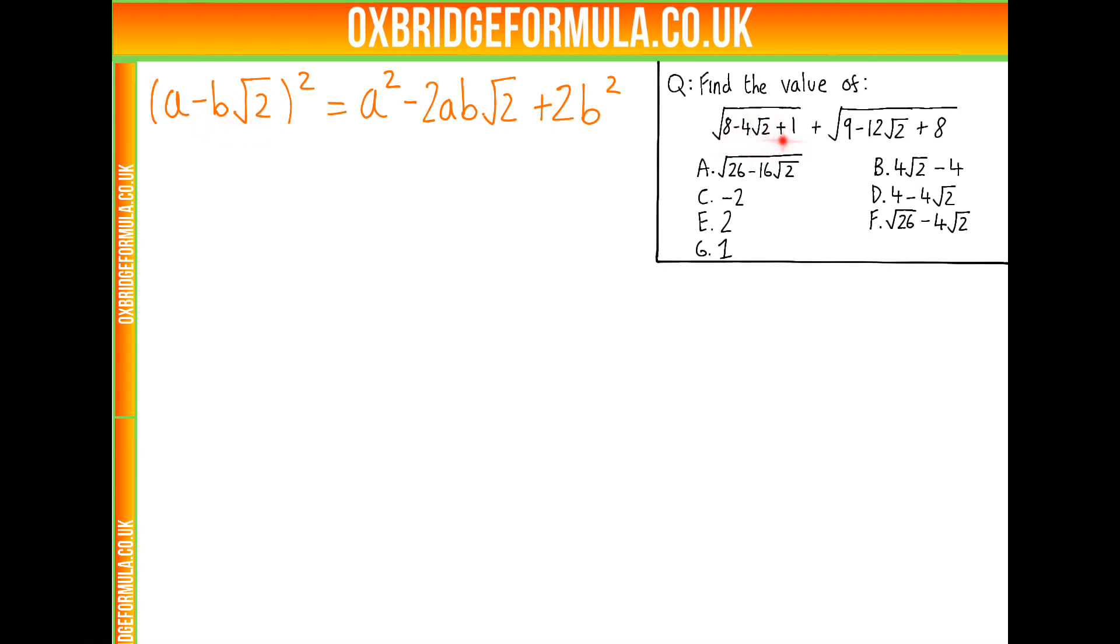So let's try and mimic this first one. So what do we need? Well, we need 2ab to be 4, and we need a squared plus 2b squared to be 8 plus 1, so 9.